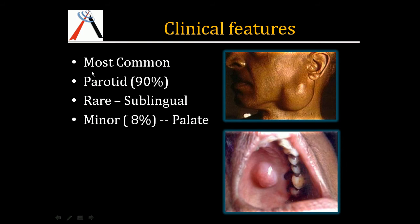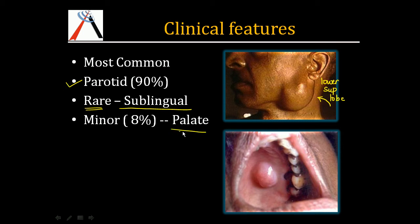Pleomorphic adenoma is the most common tumor of the salivary gland and is very commonly seen in the parotid gland, specifically in the lower superficial lobe. Amongst the major salivary glands, it is very rare in the sublingual gland. The second most common site is the palate, a minor salivary gland, where about 8% of tumors are found.